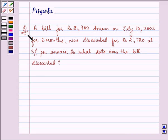Hi and how are you all today? The question says, a bill for Rs. 21,900 drawn on July 10, 2005 for 6 months was discounted for Rs. 21,720 at 5% per annum. On what date was the bill discounted?